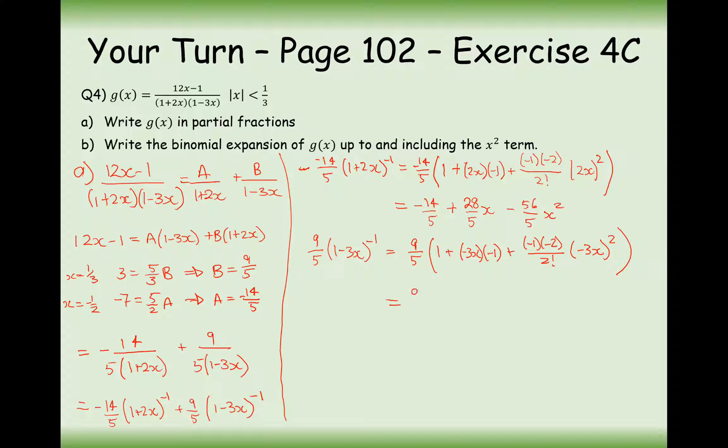Okay, so expanding the brackets here, we get 9 over 5. Plus for the double negative, 27 over 5x. Okay, how many negatives have we got here? 1, 2, 3, 4, so still positive. And this will cancel down to 9 inside the brackets, so 81 when we expand it, x squared.